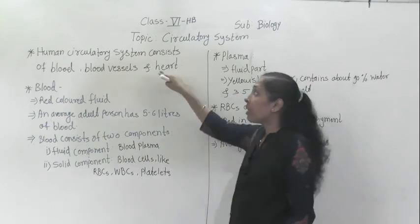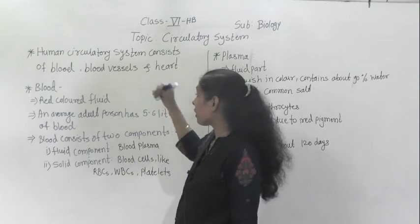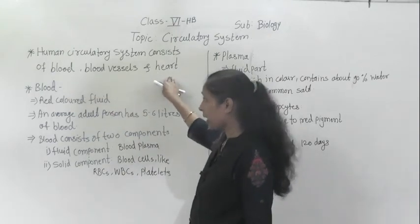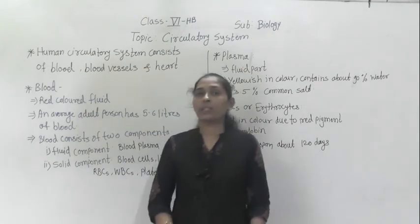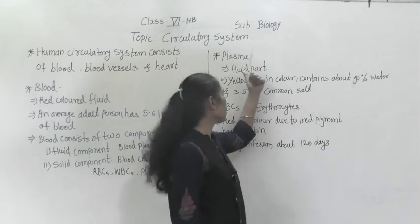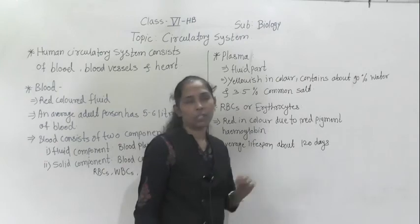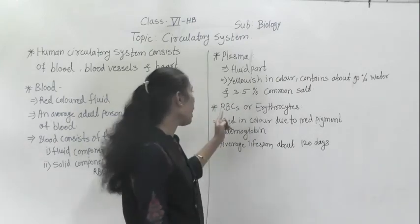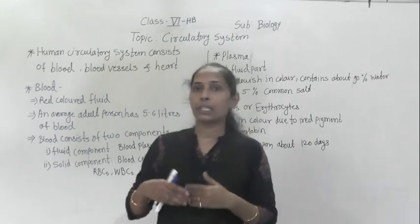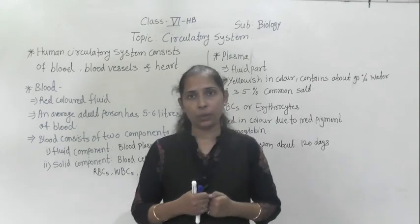Today we have discussed the human circulatory system and its parts — blood, blood vessels and heart. We also discussed blood, its liquid component plasma, and one solid component RBCs, also known as erythrocytes. We will discuss the next points in the next video. Thank you and goodbye.